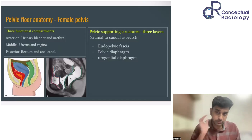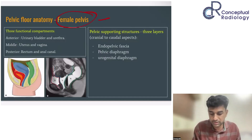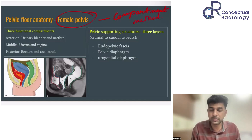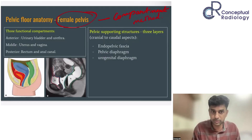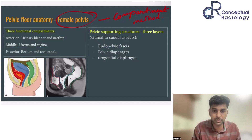Coming to anatomy — the female pelvis is divided into three compartments: anterior, middle, and posterior. Pelvic floor disorders are generally studied using the compartment method, and both diagnosis and management are based on this method. The anterior compartment consists of the urinary bladder and urethra. The middle compartment consists of the uterine body, uterine cervix, and vagina. The posterior compartment consists of the rectum and anal canal.